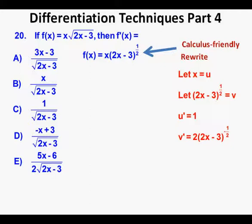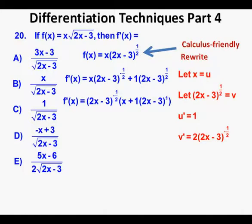Accordingly, u' = 1 and v' = 2 · (2x − 3)^(−1/2). Wait — actually v' = (1/2) · 2 · (2x − 3)^(−1/2) = (2x − 3)^(−1/2). So f'(x) = x · (2x − 3)^(−1/2) + 1 · (2x − 3)^(1/2). Now, simplifying, we factor out (2x − 3)^(−1/2) from each term and get f'(x) = (2x − 3)^(−1/2) · [x + (2x − 3)], which simplifies inside the brackets to 3x − 3.